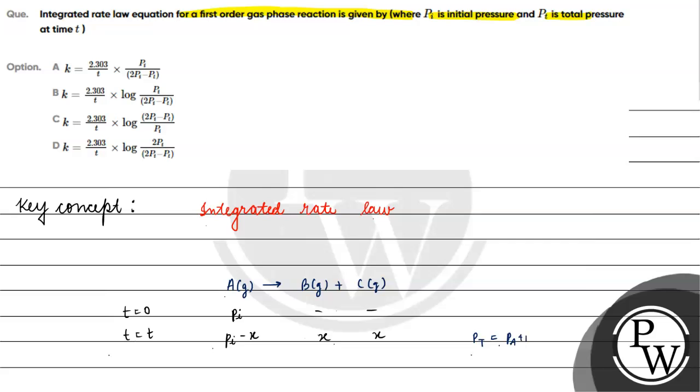So pA plus pB plus pC at time t equals t. We have pA as pi minus x, plus x, plus x. The minus x and plus x cancel out, so pi plus x. Total pressure equals pi plus x.